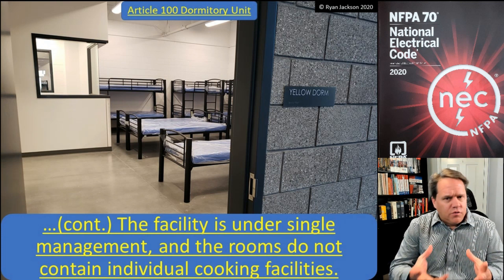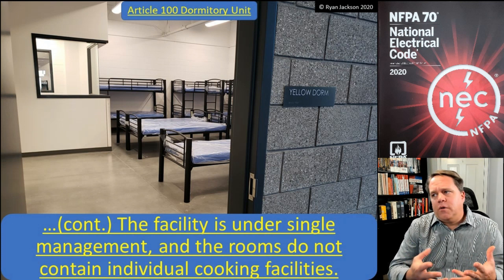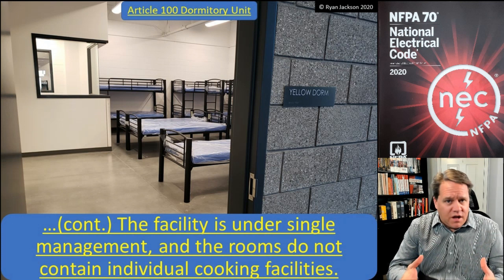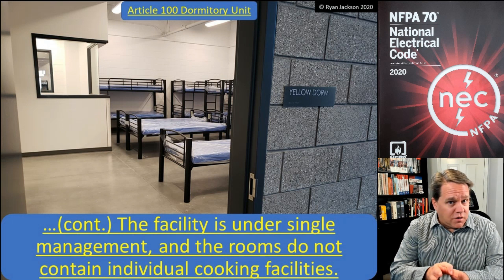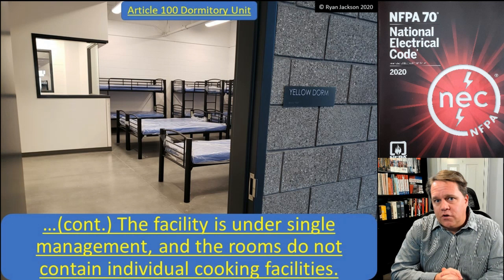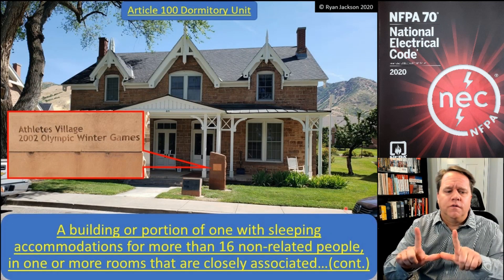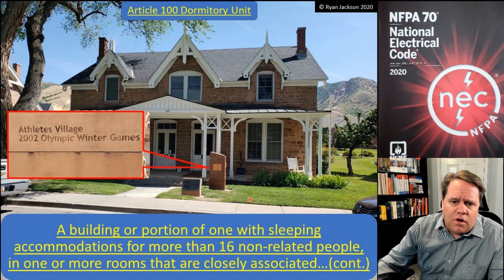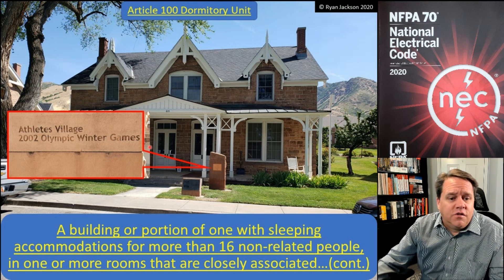College student housing would certainly meet that definition — more than 16 people, not related to each other, individual rooms without cooking facilities, and under single management. This is actually the University of Utah student housing, which also served as the athletes' living quarters during the 2002 Winter Olympics.